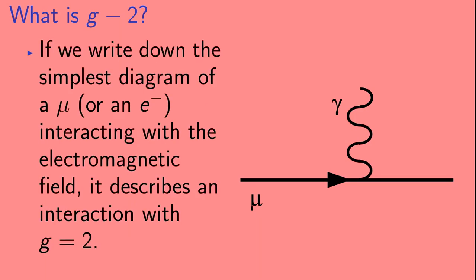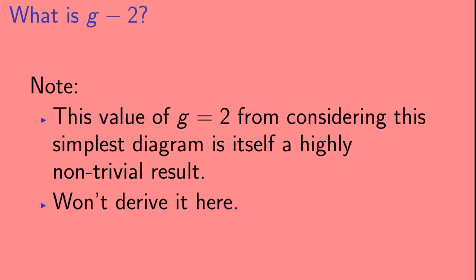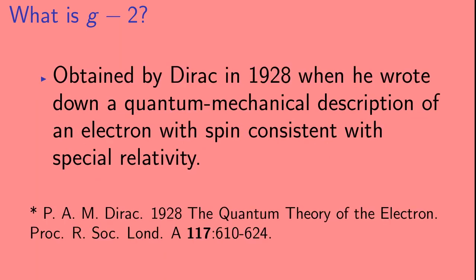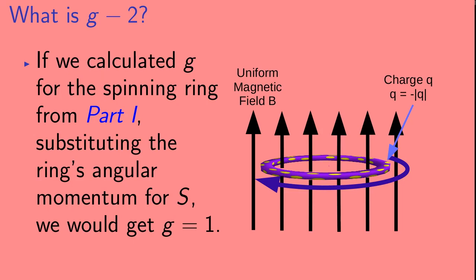If we write down the simplest diagram of a muon, or for that matter, for an electron, interacting with the electromagnetic field, it describes an interaction with G equal to 2. Now, we should note that this value of G equal to 2 that comes from considering this simplest diagram is, itself, a highly non-trivial result. And we're not going to derive it here. It was obtained by Dirac in 1928 when he wrote down a quantum mechanical description of an electron with spin consistent with special relativity. In contrast, if we had calculated G for the spinning ring from part 1, substituting the ring's angular momentum for s, we would have gotten G equal to 1 for that example.